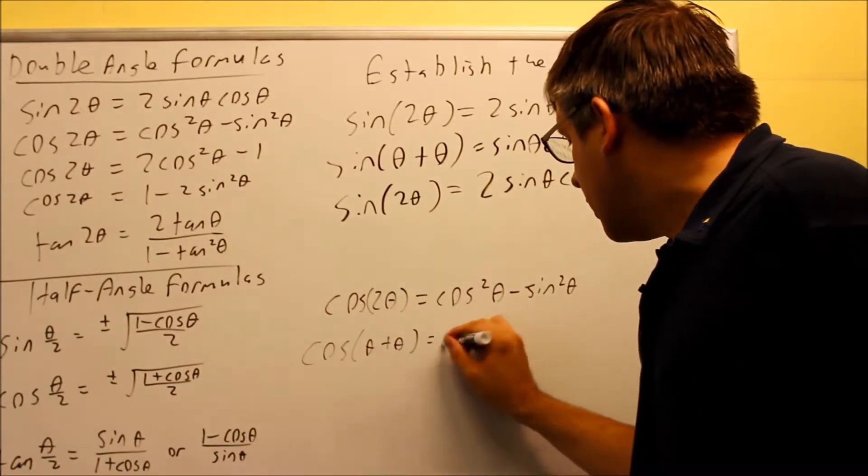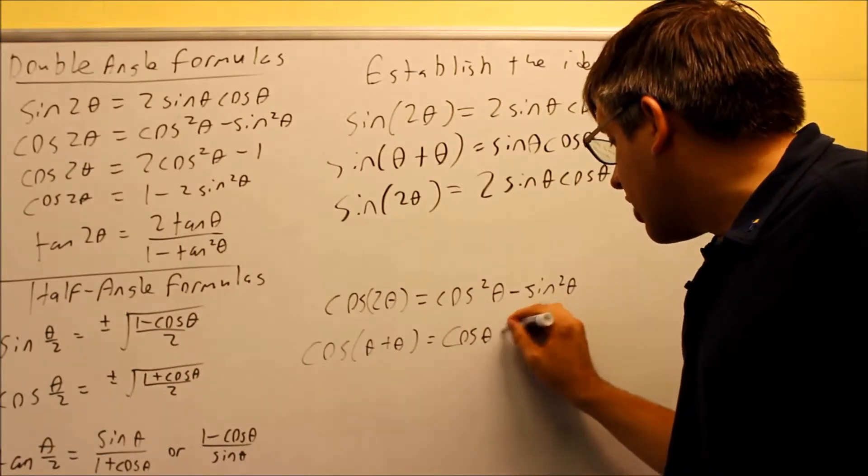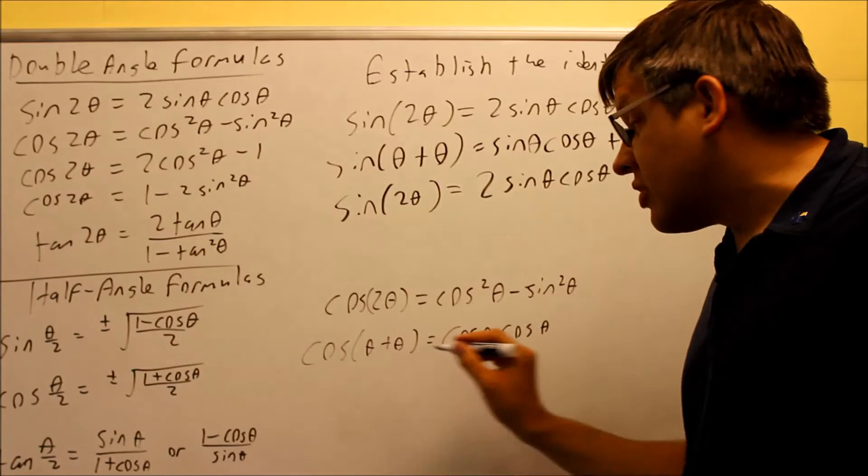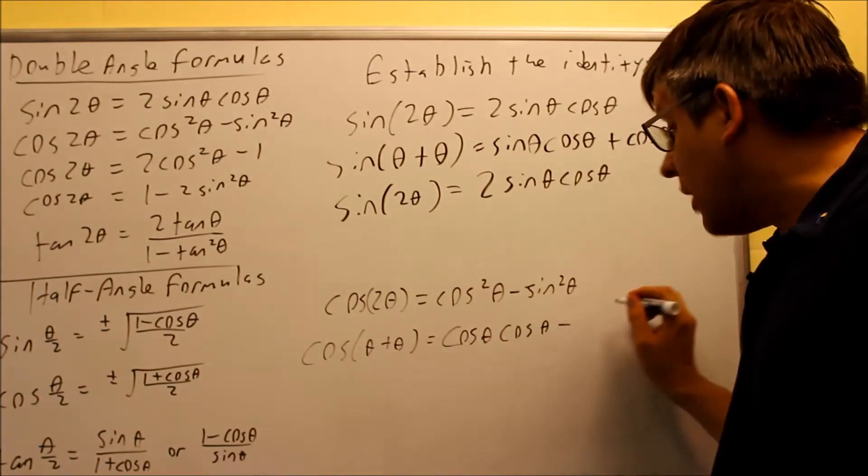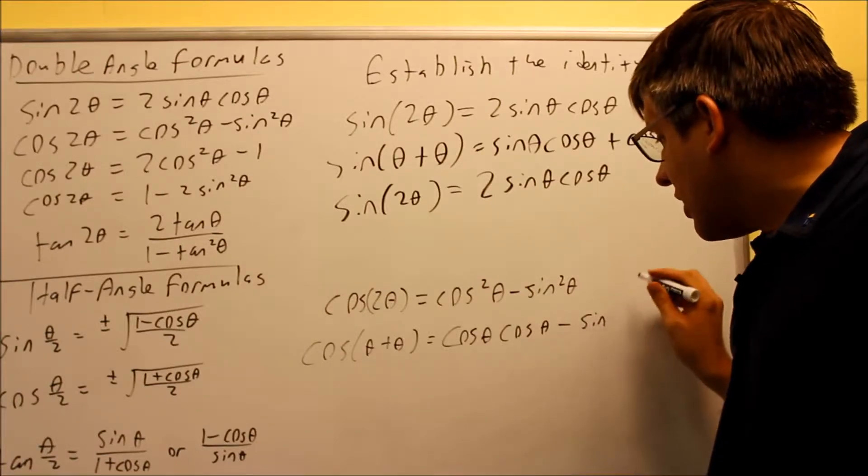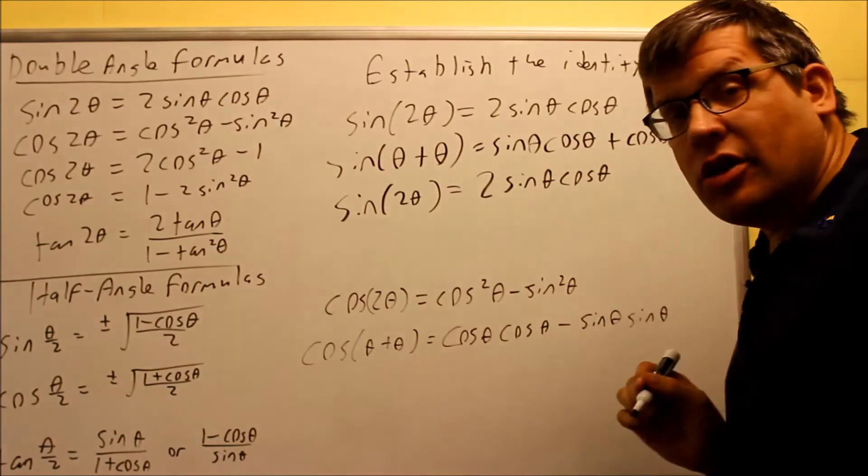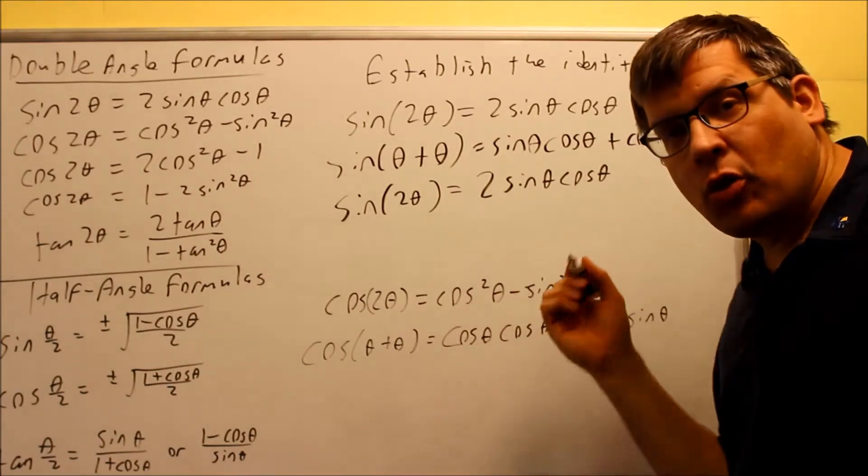So for that, we're going to do cos(x) or cos(θ). And then we have cos(y). That's going to be θ also because that's our y value. And then we have minus because that's the formula we're using there. And then we have sin(x), sin(y). So we have sin(θ) and sin(θ) here since, again, x and y are both going to be θ.